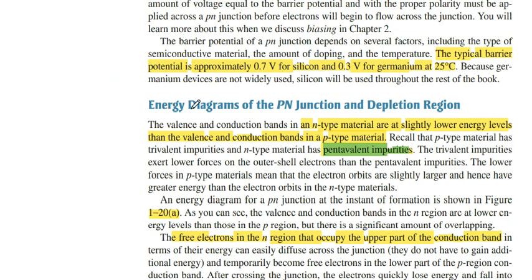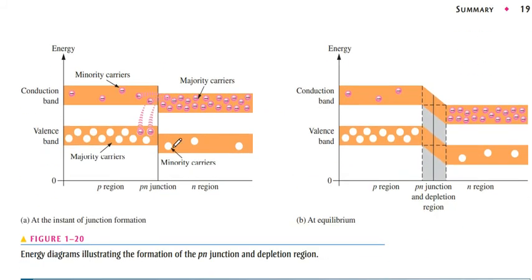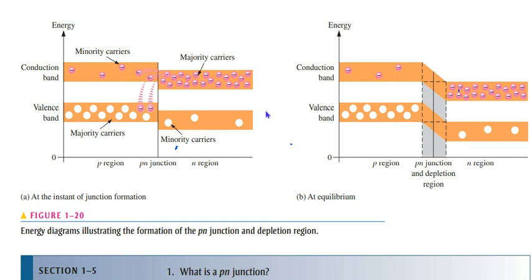The next point is the energy diagram of the P-N junction in the depletion region. The diagram shows that the majority charge carrier in the N-type semiconductor is electrons, while the majority charge carrier in the P-type semiconductor is holes. Electrons are mostly in the conduction band, and holes are the minority carrier in the valence band in the N-type region.